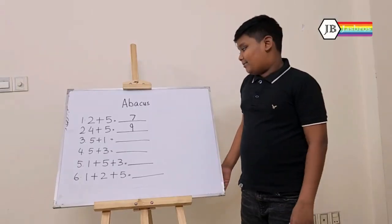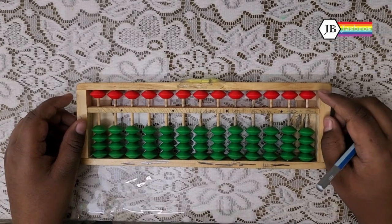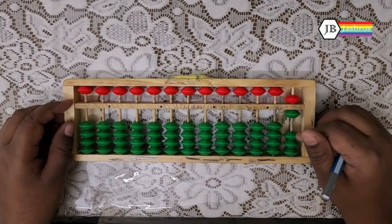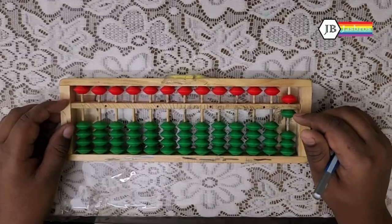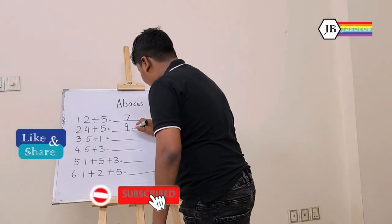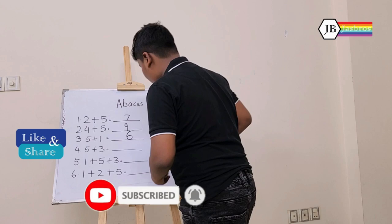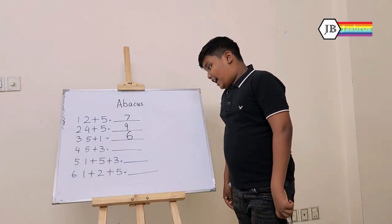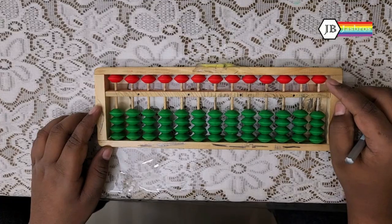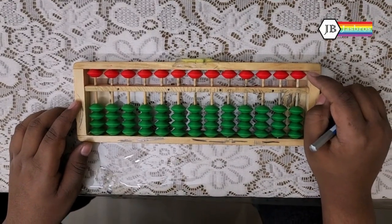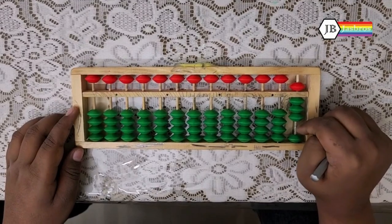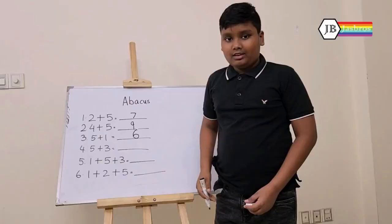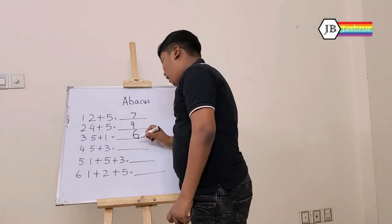Our next sum is 5 plus 1. So in our abacus, we will take 5 and then add 1, which is 6. So let's write 6. Now, our fourth question is 5 plus 3. For our first number we will take 5 and then add 3. We can see that the answer is 8. So let's write 8 on our board.